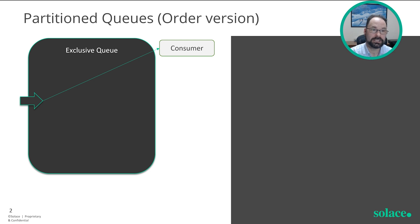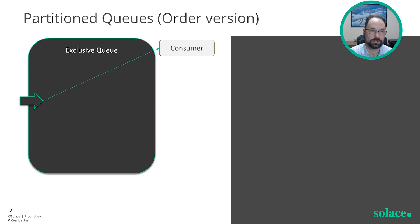Like Kafka consumer groups, but with added benefits. It allows you to horizontally scale consumers while also filtering and providing in-order delivery. I'll take you through an example to show you how it works.